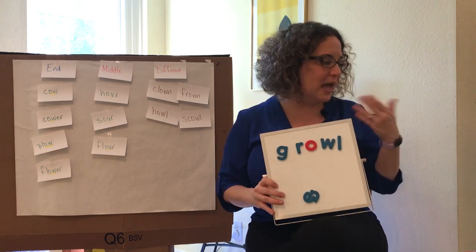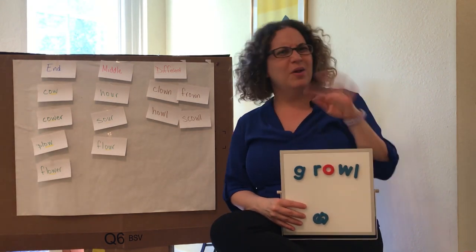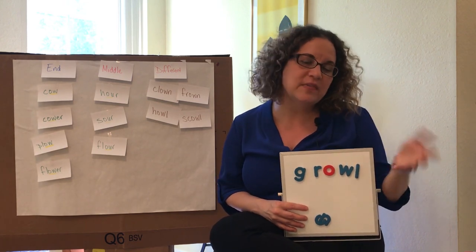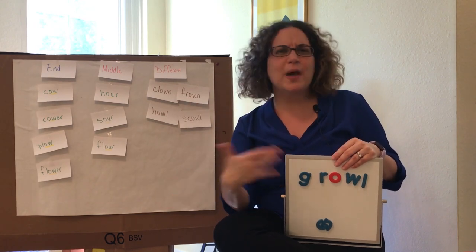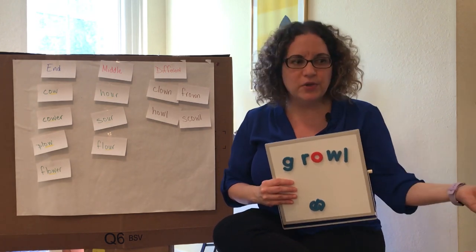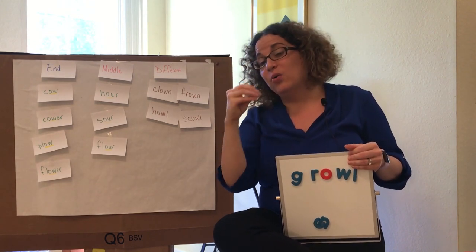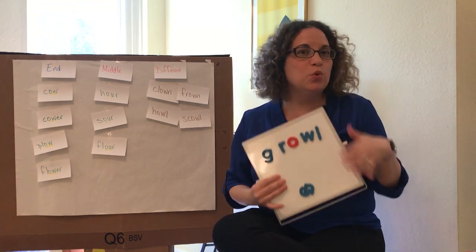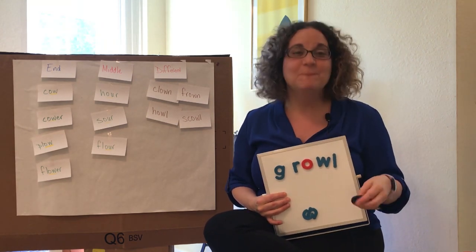As you're working with words with the O-W and O-U patterns and trying to decide which one to use, say the word slowly and listen for where you hear the ow sound. If you hear the ow sound at the end of a word or at the end of a syllable, try O-W. If you hear the ow sound in the middle of a word, try O-U. And if it sounds like a word family such as town or gown, or growl or howl, stick with your O-W. That's work you can do whenever you're writing and trying to decide which pattern to use in your spelling. Thanks for learning with me.